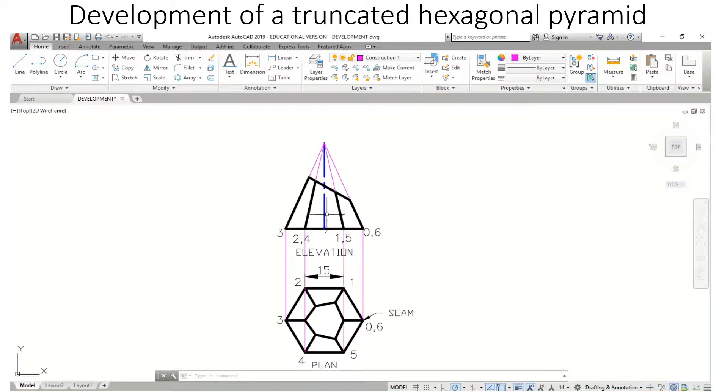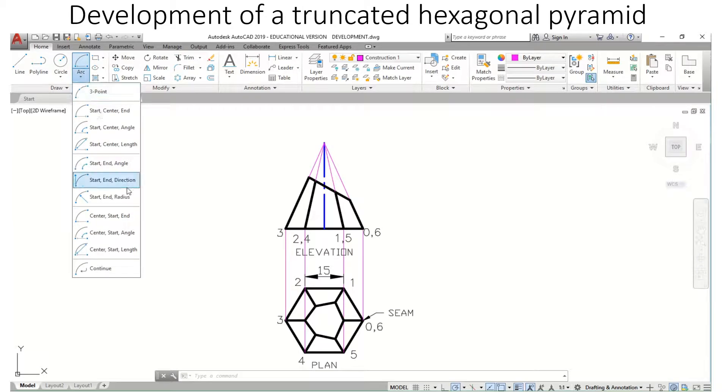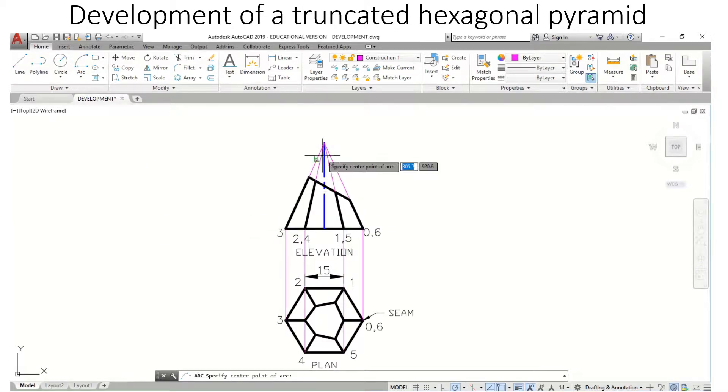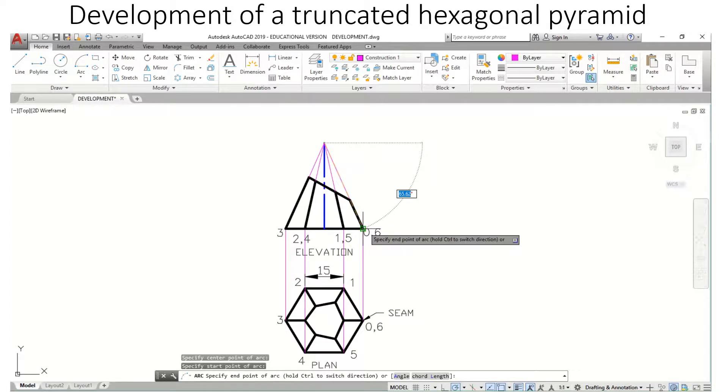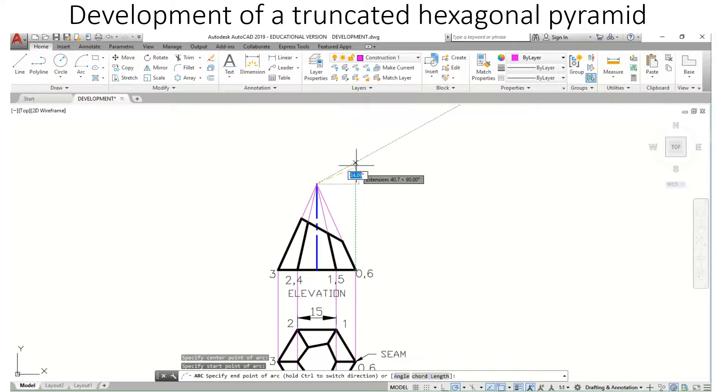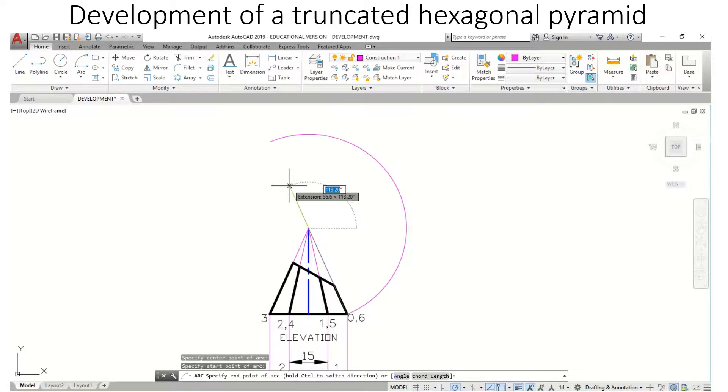For radial line development, we're going to use an arc. I'm going to go to my arc tool, center, start, end, which would be the long side of the pyramid. I'm going to describe an arc a little more than half, then I'm going to trim it after.